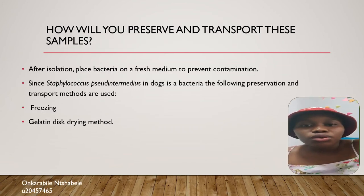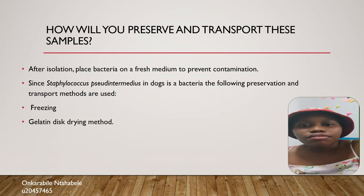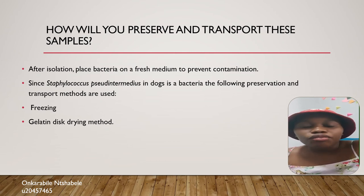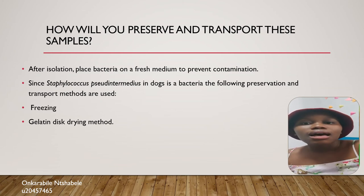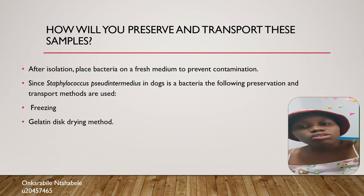Question 7 addresses how we preserve and transport samples of the bacteria, specifically Staphylococcus pseudintermedius found in dogs. The first step is to place these samples in a fresh medium to prevent contamination. Methods implemented for preservation and transport include freezing, which is the most common method and causes the bacteria to become dormant, and the gelatin disc drying method, which is used for both preservation and transportation of these bacterial samples.